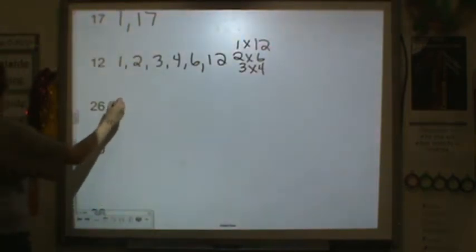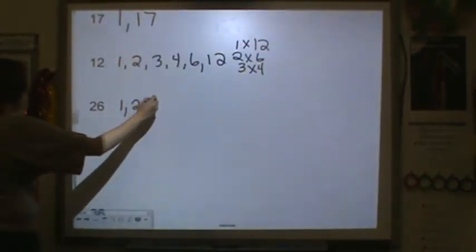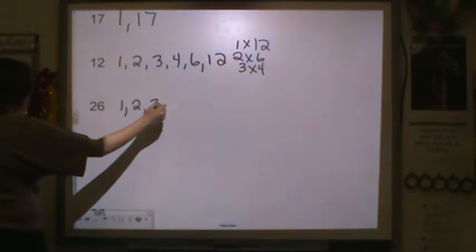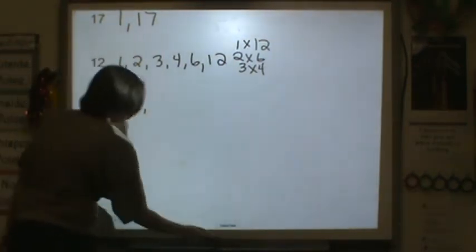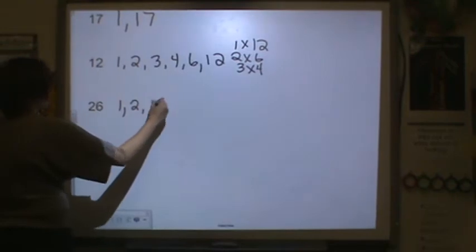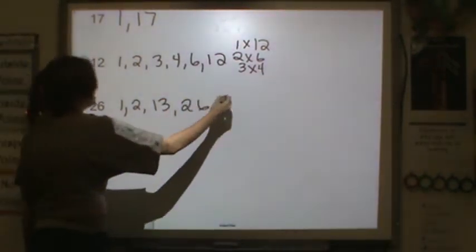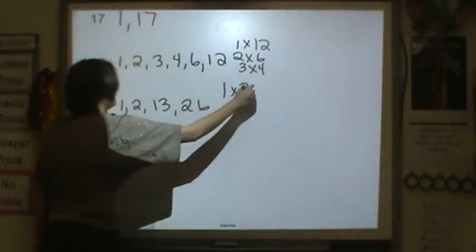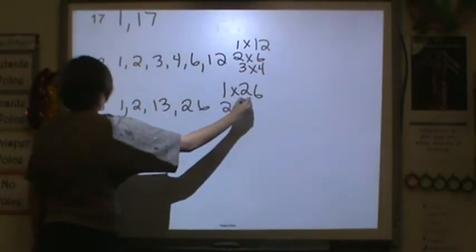26. I have 1, 2, 3. No, not 3. 1, 2, 13, and 26. So, 1 times 26 and 2 times 13.